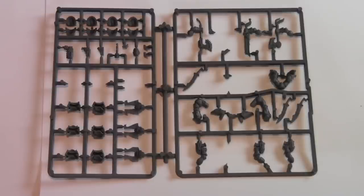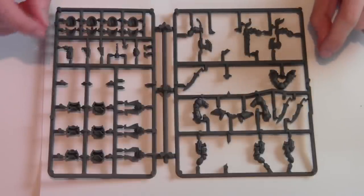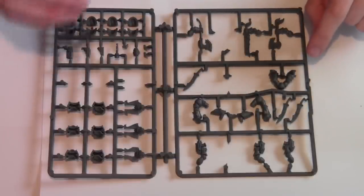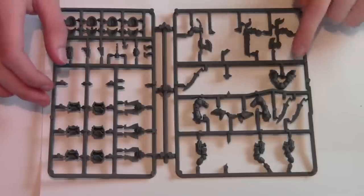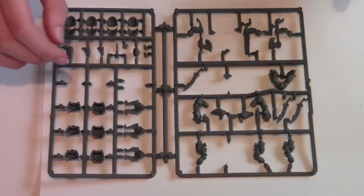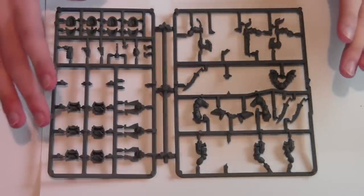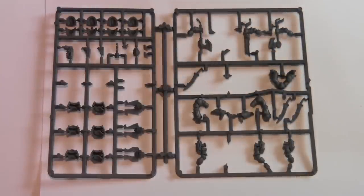This episode is about preparation of your models, so this includes removing your models from the sprues without damaging them. I'm going to show you how to tidy the models up using a knife to remove any sprue marks and removing any mold lines with a scraping tool. I'm going to show you drilling out barrels, things like that, little extras, and then I'm going to glue them all together and show you an efficient way to do that. So let's get started.